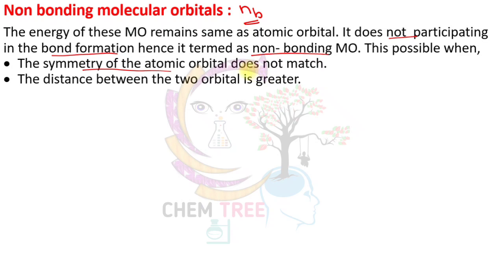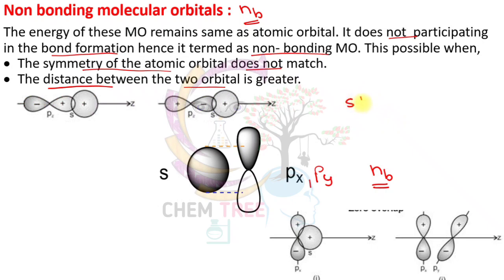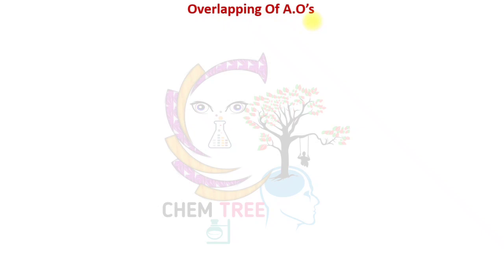The formation of a non-bonding molecular orbital occurs when the symmetry of the atomic orbitals does not match each other, or the distance between the two atomic orbitals is maximum. For example, an s orbital cannot overlap with a px or py atomic orbital and thus forms non-bonding molecular orbitals. However, an s orbital can overlap with a pz atomic orbital to form an sp sigma bond, because they have the same symmetry and internuclear axis.